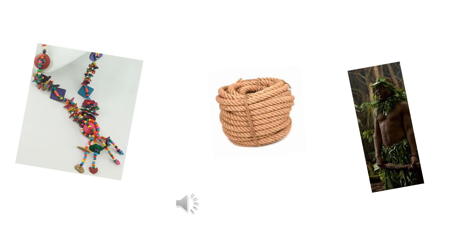Coconut fiber coir is used for making strong ropes and even fashionable necklaces. Have you ever wondered how ancient humans dressed when there was no spindle or loom to make yarn or fabric? They wore leaves and animal skin as dress, and simply draped it on their body.